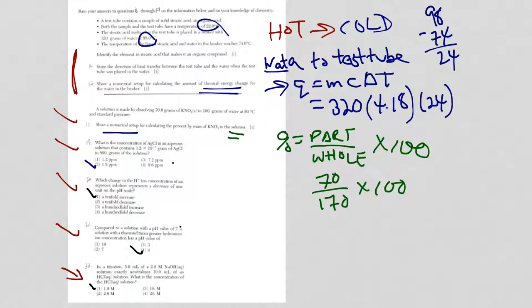320 grams, 4.18 for liquid water. You get that off the front of the reference table. And delta T is 24. The 98 was the temperature of the water to start and then it went down to 74. You're only showing the setup, so you stop there.